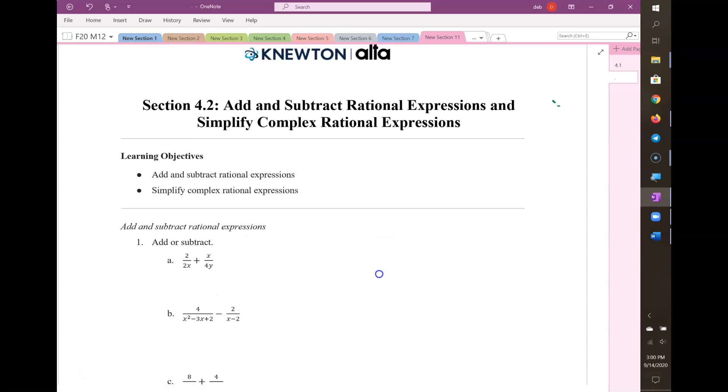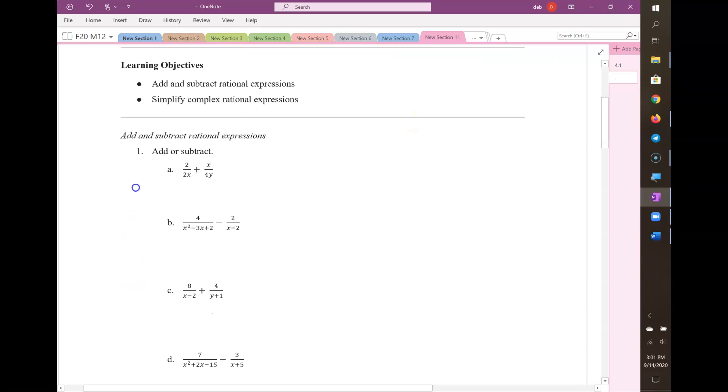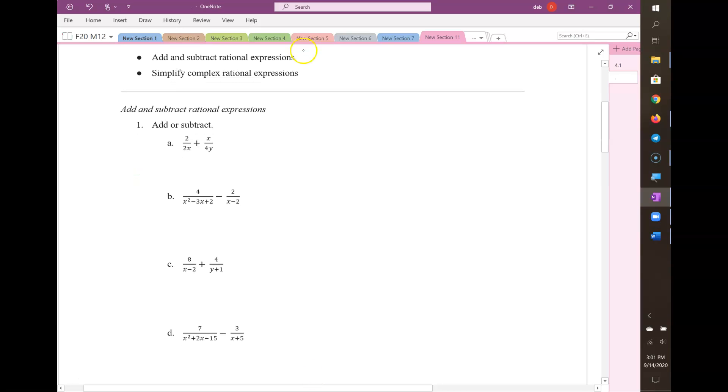Section 4.2 is adding and subtracting rational expressions, so a ratio of polynomials, and simplifying complex rational expressions. Adding and subtracting rational expressions, remember that you need to have a common denominator.